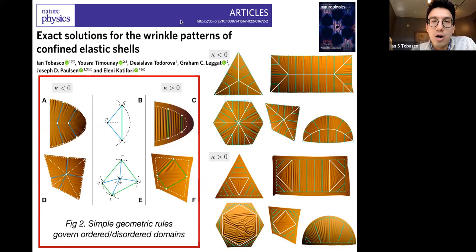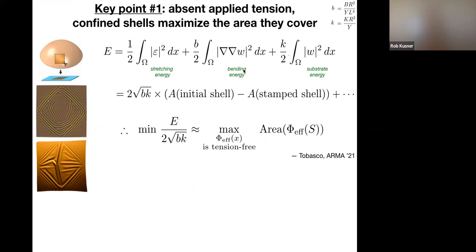Those are the two geometric rules for predicting the wrinkle patterns as a function of the initial curvature and initial shape. That's a geometric way of parsing the data. Wouldn't it be nice if you could predict this — not just say that it's true? And that's what we do.